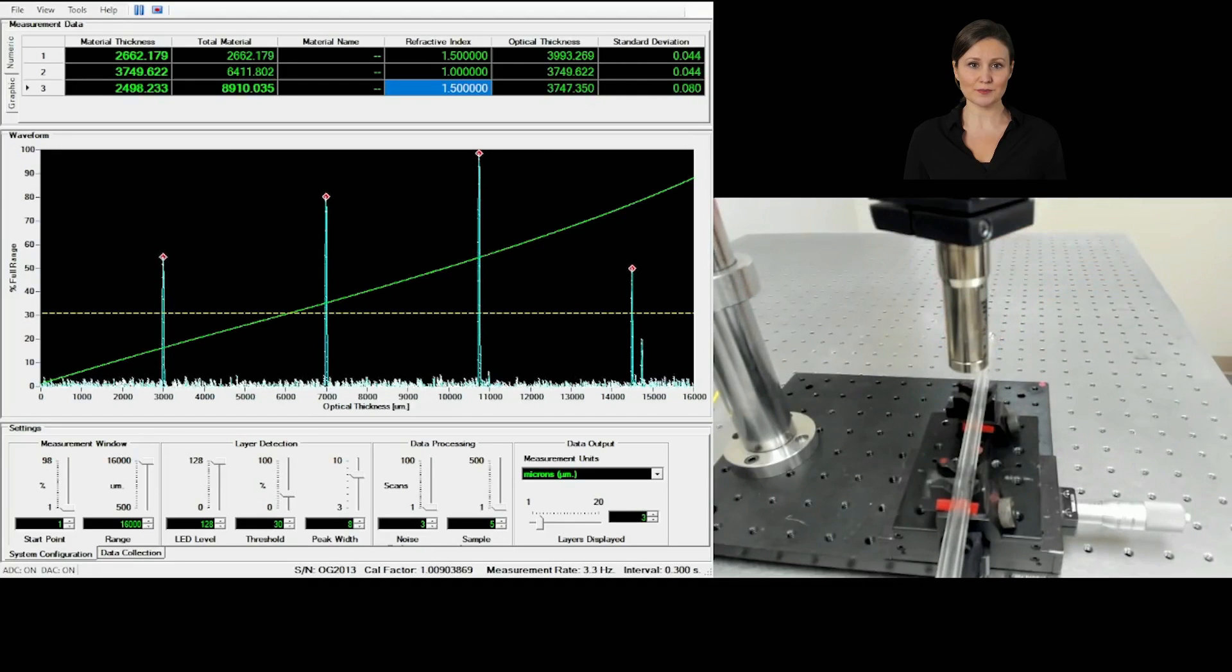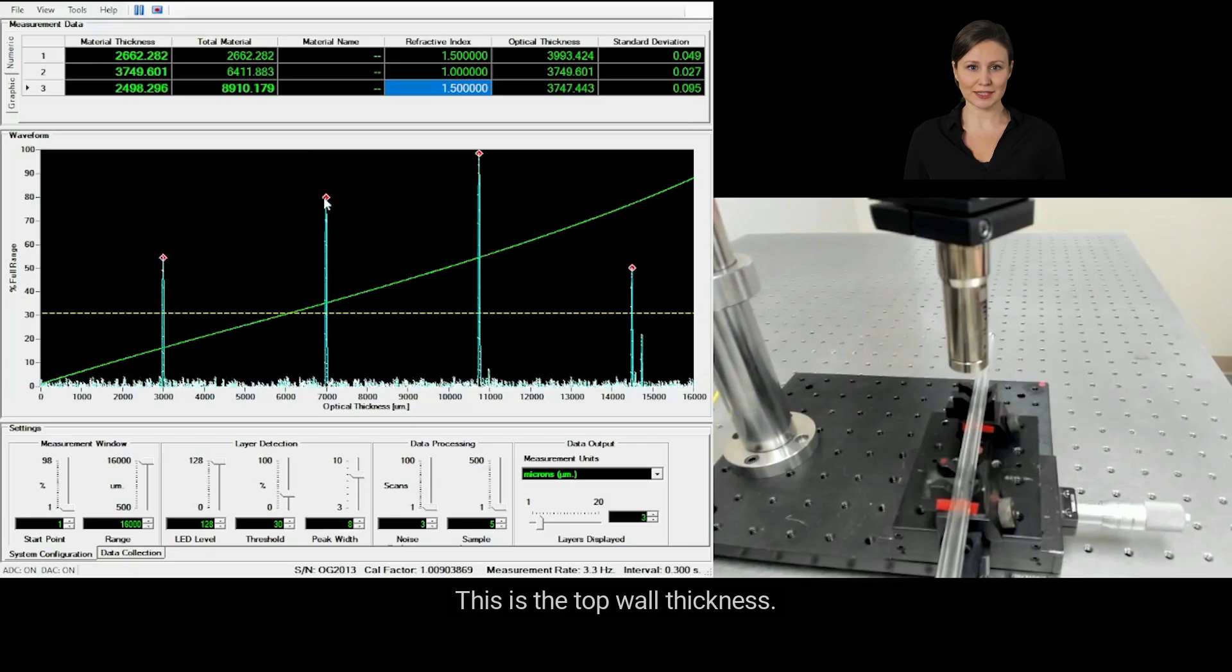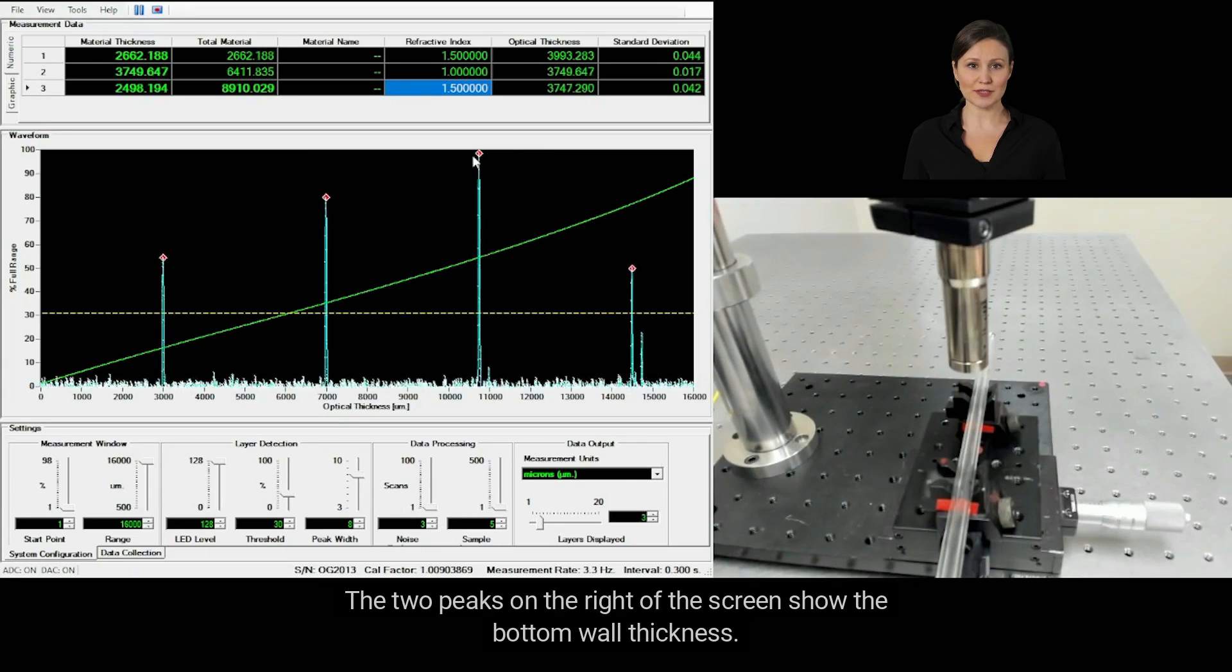The inner and outer surfaces. The two peaks on the left show the distance between the upper surface and lower surface of the top wall of the tube. This is the top wall thickness. The two peaks on the right of the screen show the bottom wall thickness.